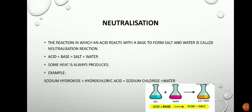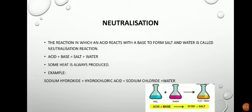Now take a sodium hydroxide solution in a dropper. Add this sodium hydroxide solution to the hydrochloric acid in the test tube drop by drop, while stirring. Continue to add sodium hydroxide solution until a light pink color just appears in the solution. At this stage, all the hydrochloric acid in the test tube has been completely neutralized by the sodium hydroxide base, and a neutralization reaction has taken place.